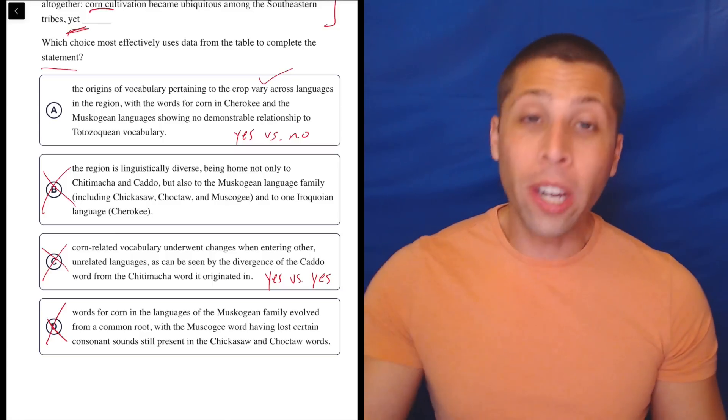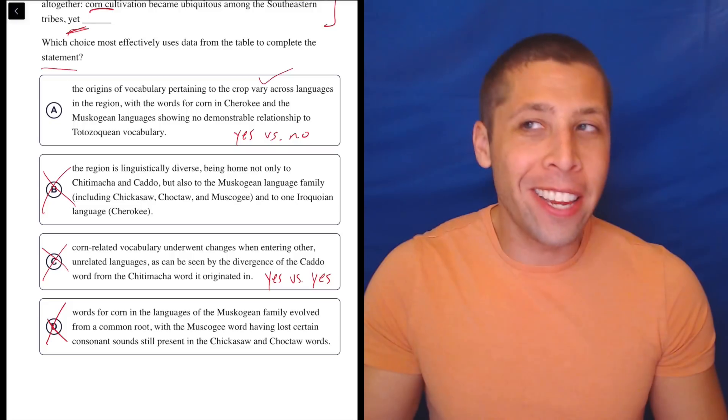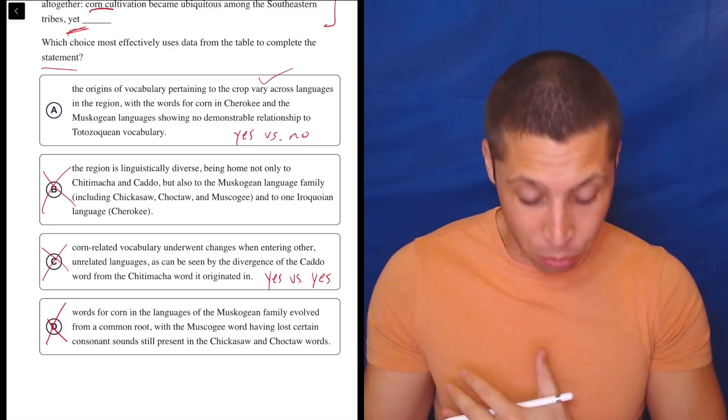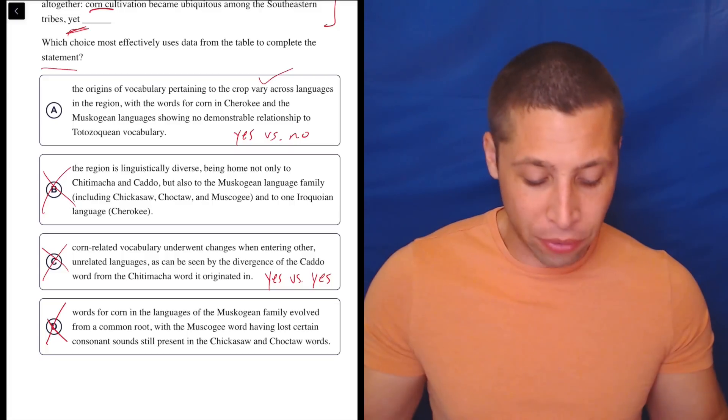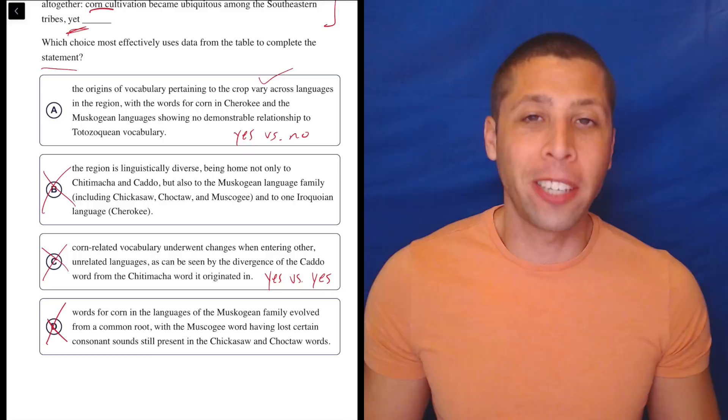And this goes to show sometimes why with the science passages or really anything on a topic that we're not familiar with, we are at an advantage when we know nothing. Because choice D makes no sense. I have no idea what they're talking about. I don't know what the common root would be. I have no idea what the different consonant sounds would be.